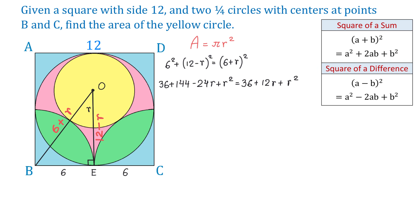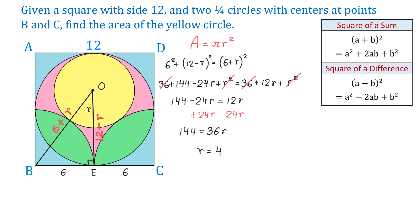Now let's cancel the same terms on both sides — that will be 36 and R squared. We now have 144 minus 24R equals 12R. Adding 24R to both sides gives 144 equals 36R. Dividing both sides by 36, we get R equals 4. So the radius of the yellow circle is 4 units.